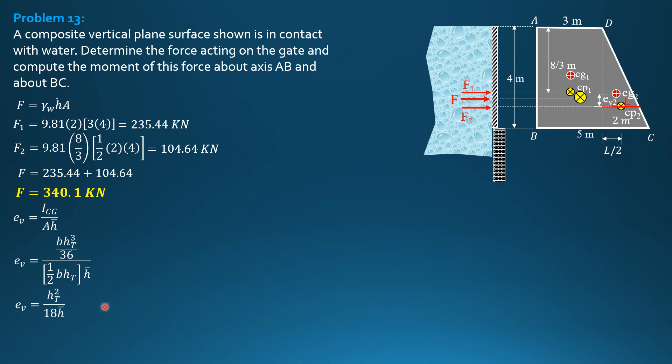So that's the formula: height of triangle squared over 18 bar H. If you can remember, for rectangle it is height of rectangle squared over 12 bar H; for triangle, height of triangle squared over 18 bar H. So substitute: height of triangle is 4, so 4 squared over 18, and bar H is 8/3. E sub V is 1/3 meter.